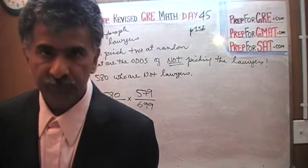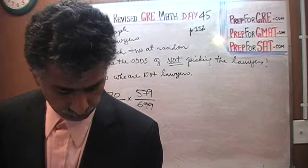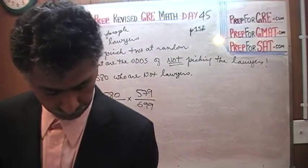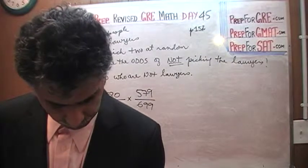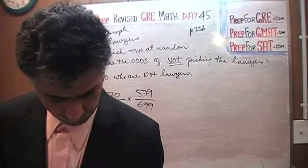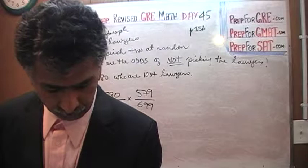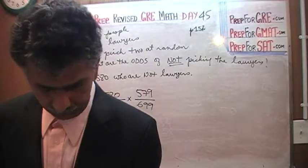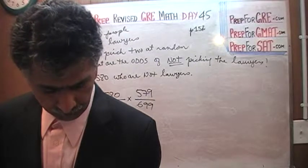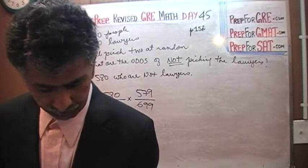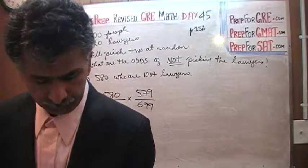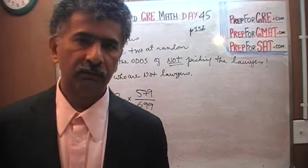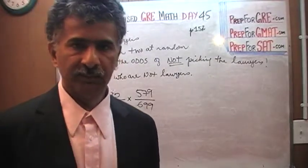As you look at the answer choices, they're all nice round numbers: 50%, 60%, 70%, 80%, and 90%. The question is worded: 'Which of the following is closest to the probability that neither of the members selected will be a lawyer?' They're looking for the closest answer, an approximation, not the exact number.